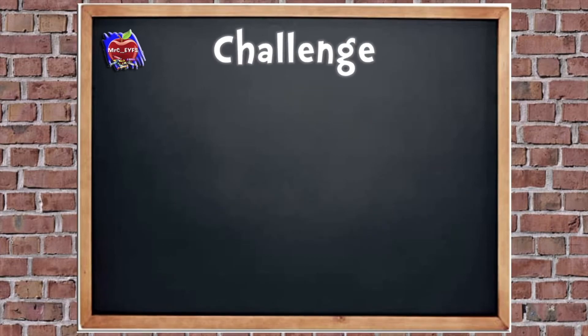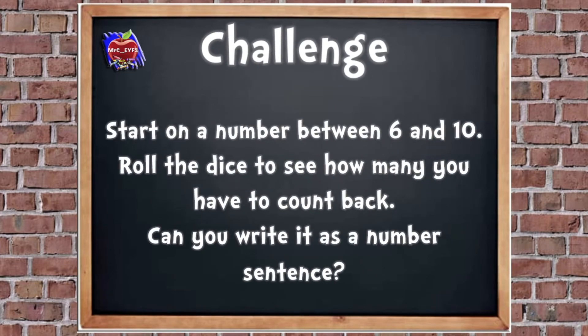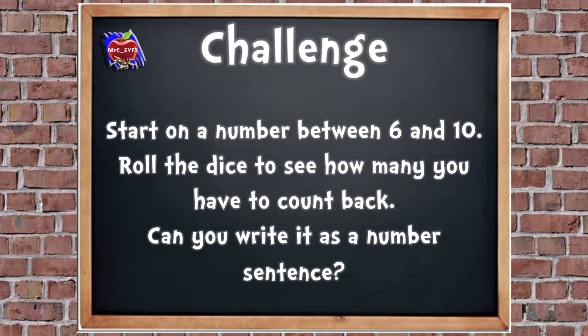Here's your challenge: start on a number between six and 10 — so it could be six, seven, eight, nine, or ten. Then you're going to roll the dice to see how many you have to count back, so how many you have to take away. And then can you write it as a number sentence? Like we had 10 take away three equals seven — you have a go at that.